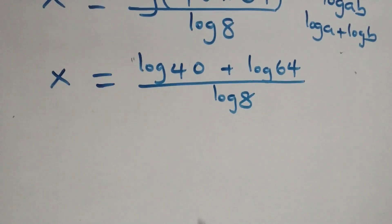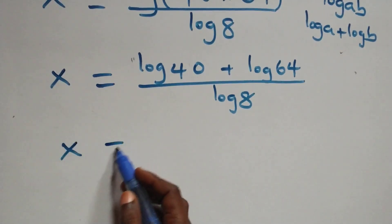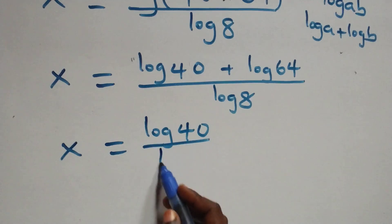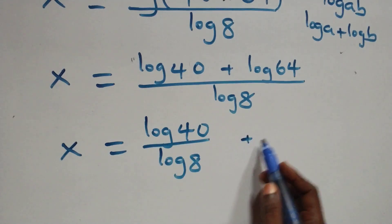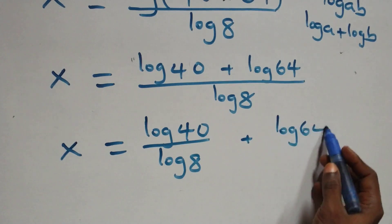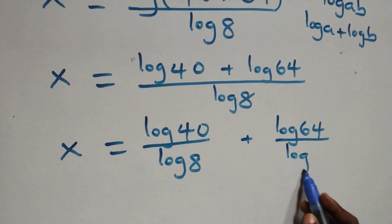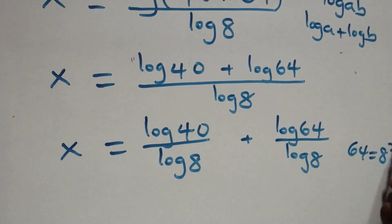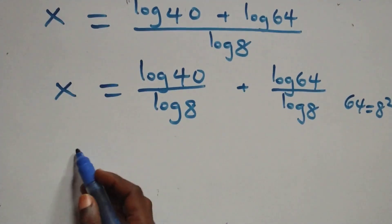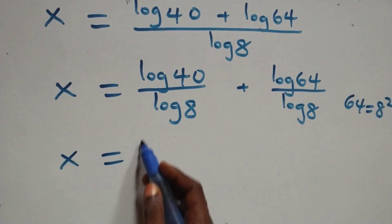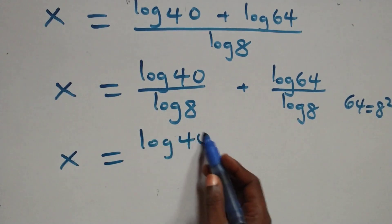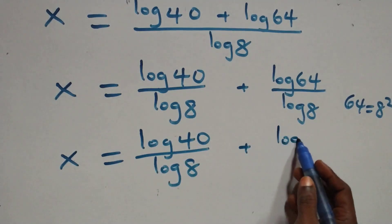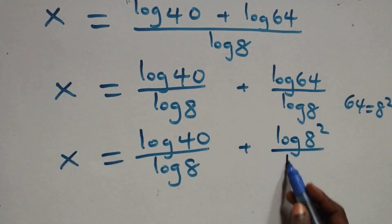The next step: we separate this into two fractions, and we have x equals log 40 over log 8 plus log 64 over log 8. We can write 64 as 8 times 8, that is 8 squared. So this becomes x equals log 40 over log 8 plus log 8 squared over log 8.